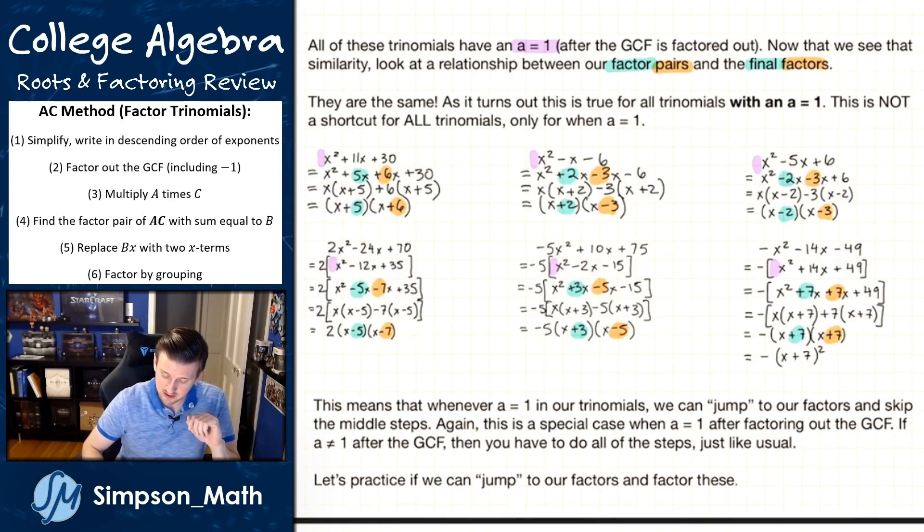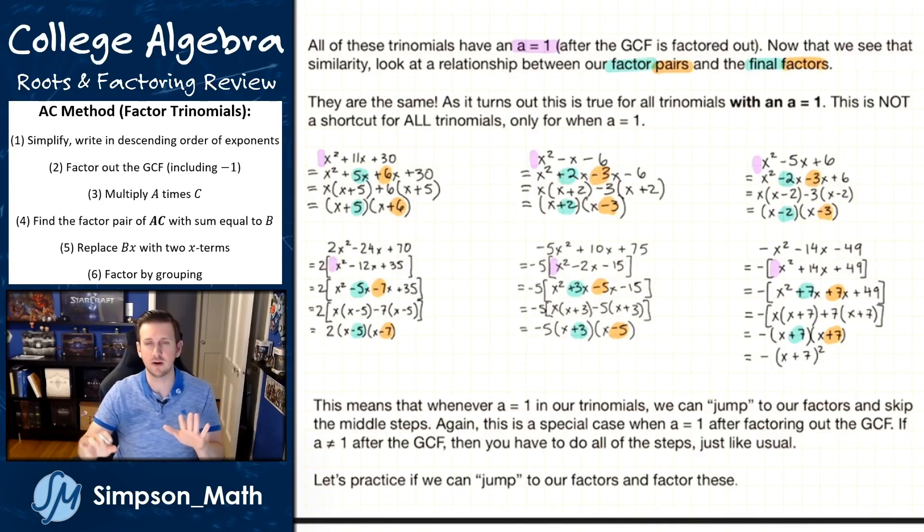So on this top row, the A equaling one is a little bit obvious, but on the second row, after you factor out the GCF, you then see an A of one, right? So they all have an A of one.